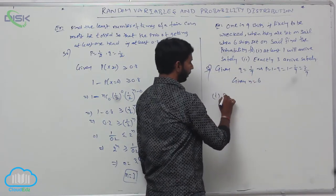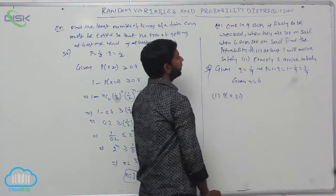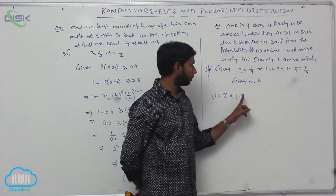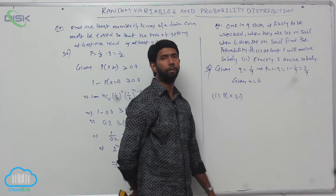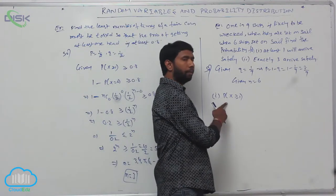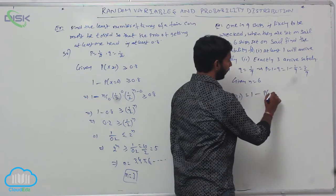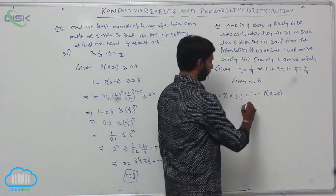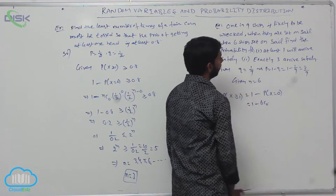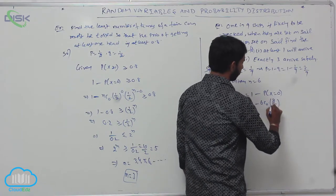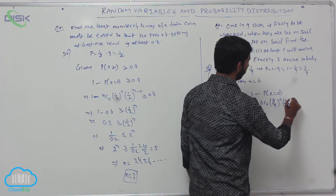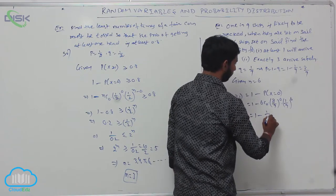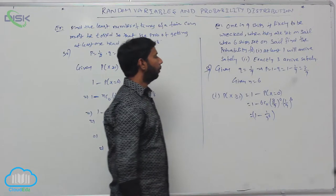The first part is P of X greater than or equal to 1 — at least 1 will arrive safely. It can be written as 1 minus P of X equal to 0, which equals 1 minus 6C0 into (8/9)^0 into (1/9)^6. That is equal to 1 minus (1/9)^6.